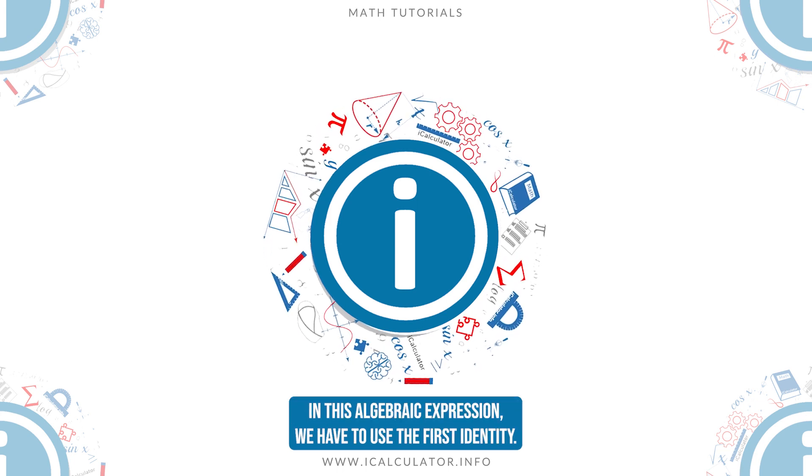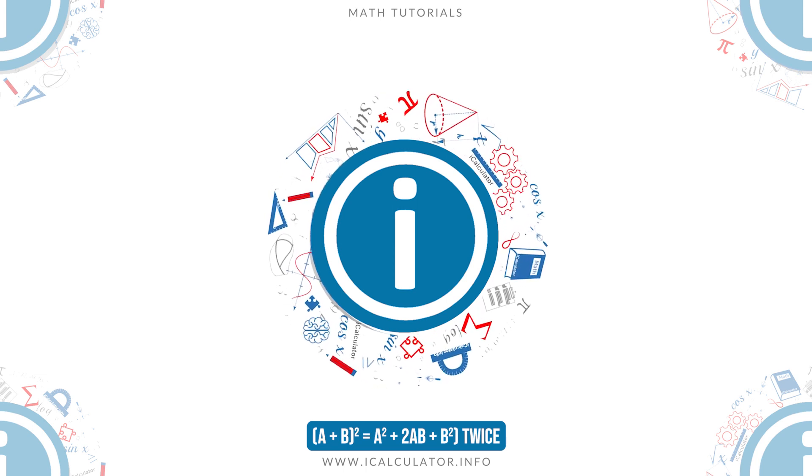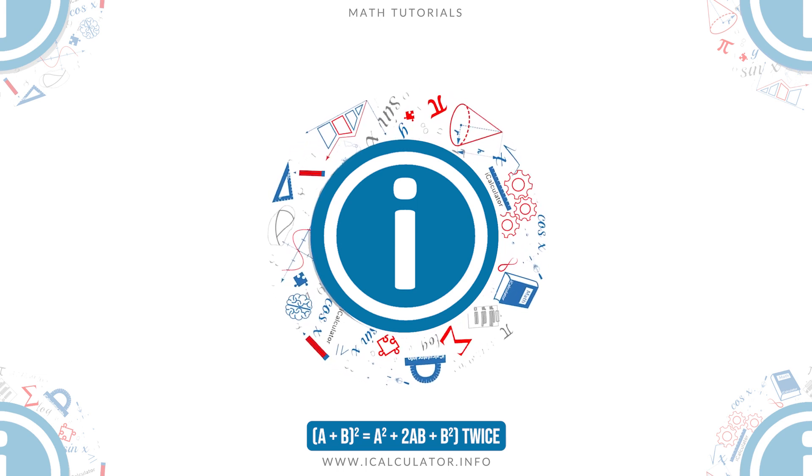In this algebraic expression, we have to use the first identity a plus b squared equals a squared plus 2ab plus b squared twice.